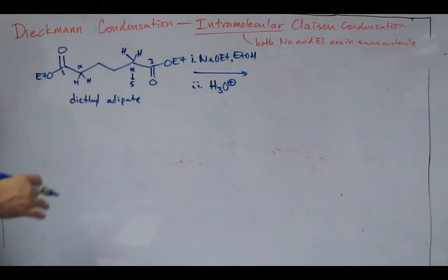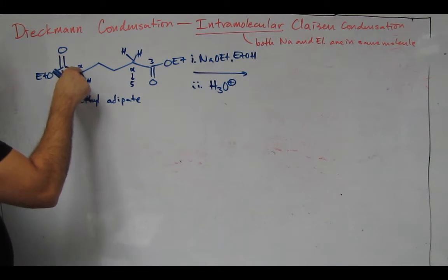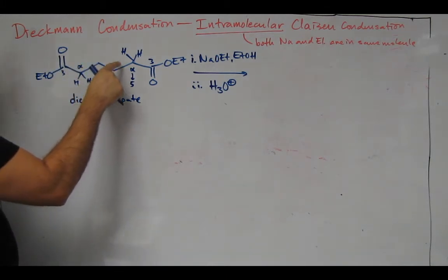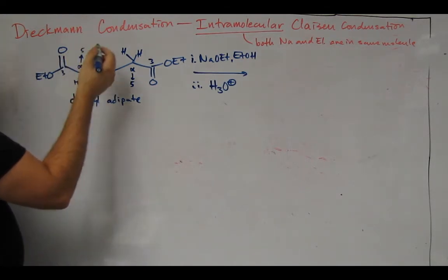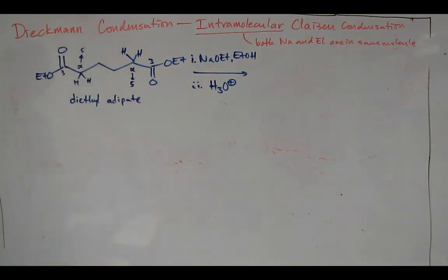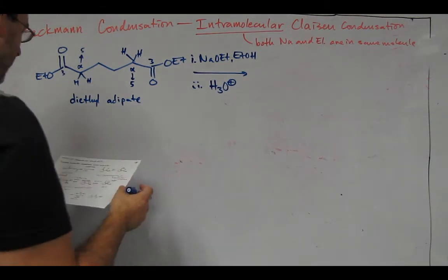Let's do the exercise from the other alpha carbon. If we generate the enolate here, that's one, two, three, four, five. That's also going to generate a five-membered ring. So at this point it does not matter which alpha carbon is deprotonated.